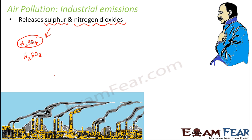Why are so much sulfur dioxides emitted from industries? Because industrial activity processes materials containing sulfur — for example, electricity generation from coal, oil, or gas that contains sulfur. Similarly, mineral oils contain sulfur, so their processing also releases sulfur dioxide. Industries deal with materials that have a lot of sulfur, so sulfur dioxide gets released in large amounts.